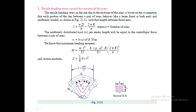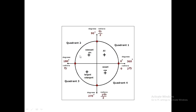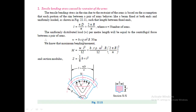The tensile bending stress is caused by the restraint of the arms. We consider the rim segment between two arms to calculate it. The length between two arms is πD/n, which equals 2πR/n, where n is the number of arms. The uniform distributed load per meter length for the rim is equal to b·t·ρ·ω²·R. From this we can calculate the bending moment, which is wL²/12 for a rectangular section.